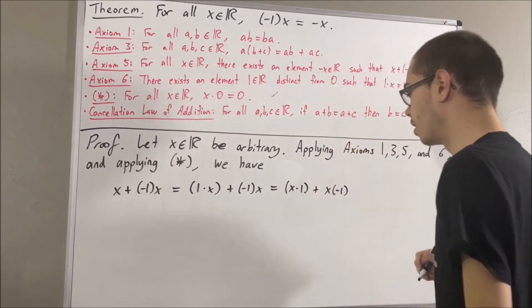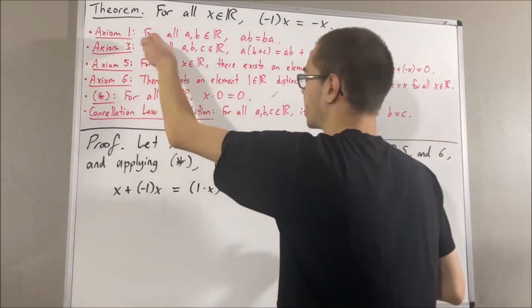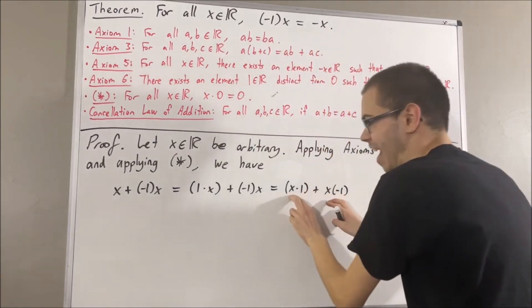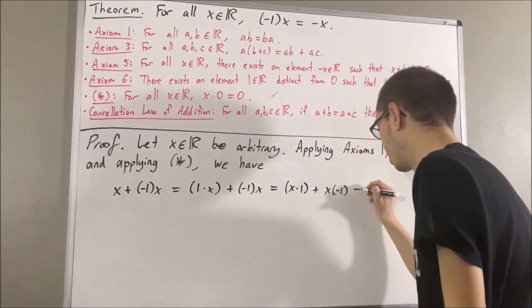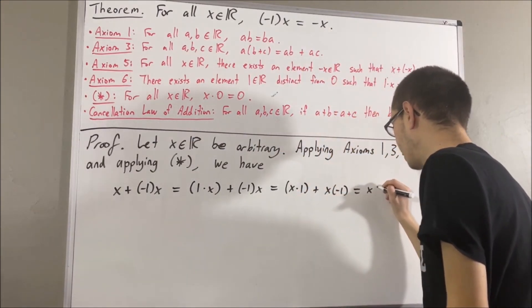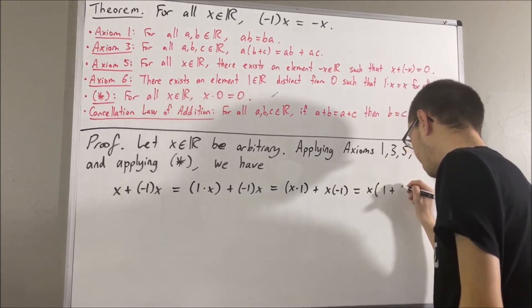Just like that. But then, applying axiom 3, we can essentially factor out the x. So this is just equal to x times 1 plus negative 1.